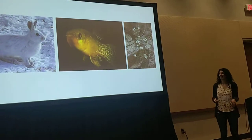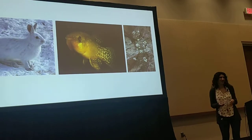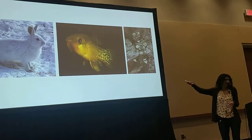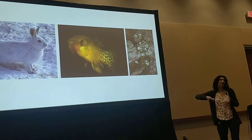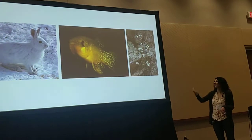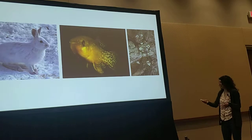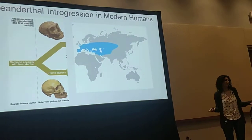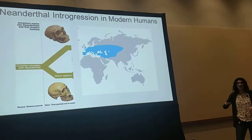Thanks to this process, snowshoe hares could camouflage with environments that are less snowy. A species of killifish could adapt to extremely polluted waters, and Arabidopsis aeronosa could inhabit these really rocky, harsh serpentine soils. And then we also have examples of adaptive introgression in our own species, and today I'm talking about Neanderthal adaptive introgression.